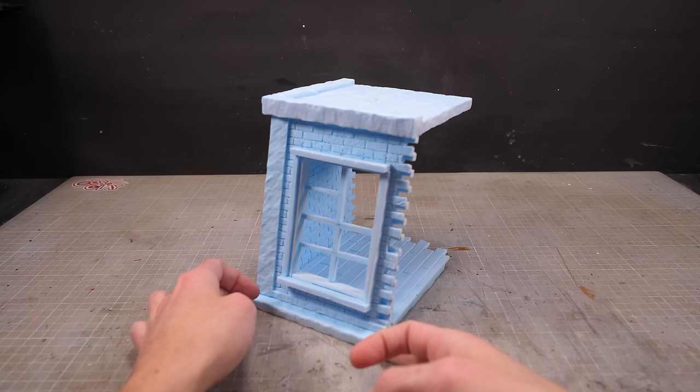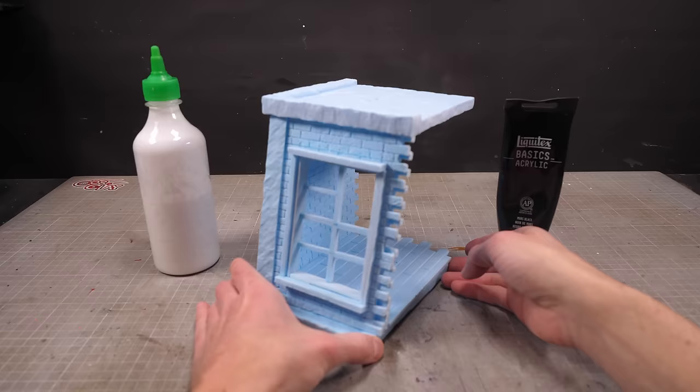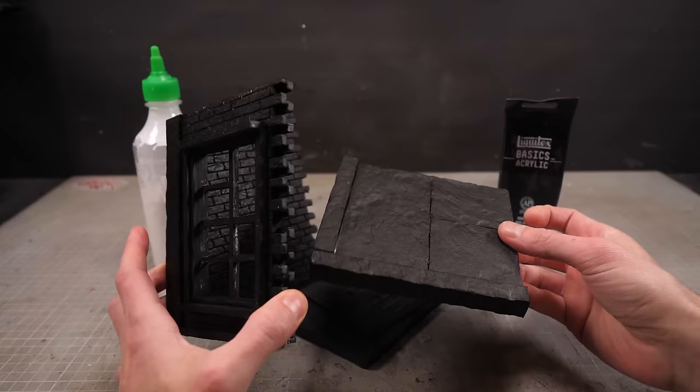However before I get to the painting I want to seal everything in a coat of white PVA and black paint. This will seal and protect the foam as well as prime it to make the painting a little easier.